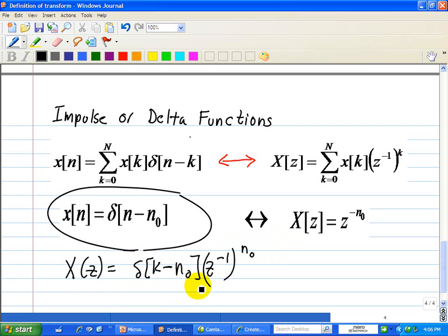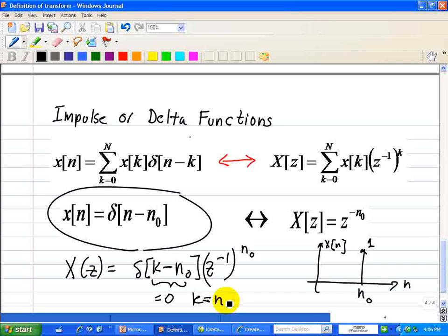With delta functions, you only evaluate when the argument equals zero. This delta function has a weight of 1 in the n-domain, representing our sequence x[n] delayed by n₀. The delta function only exists at the point n₀, so when we substitute k, k simply equals n₀.